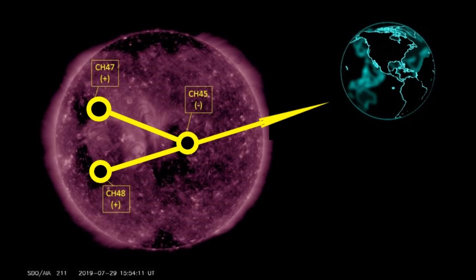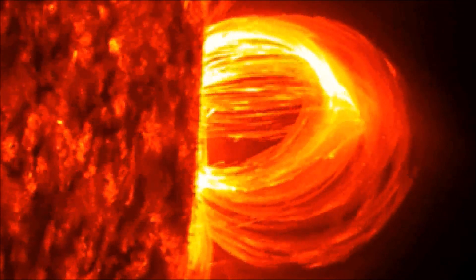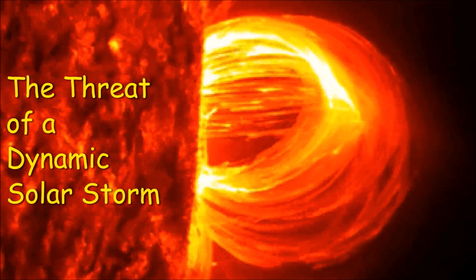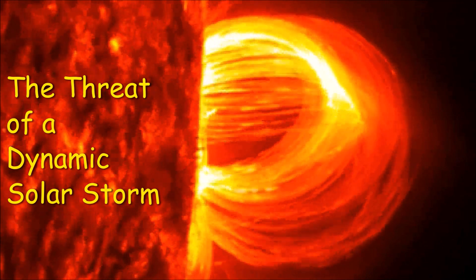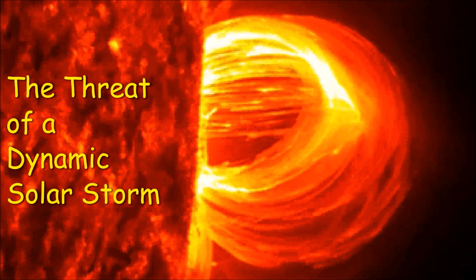This is a frightening prospect, one that is already shared by numerous researchers in the field of solar science. The threats and the consequences of a dynamic solar storm similar to the 1859 Carrington event were recently shared by maverick geologist Randall Carlson and historical theorist on extinction level events.